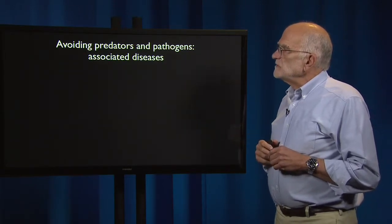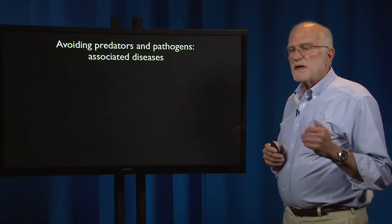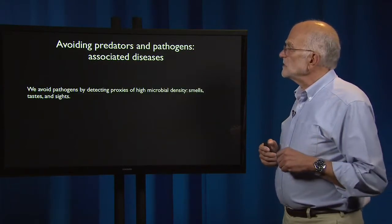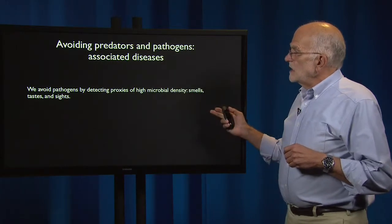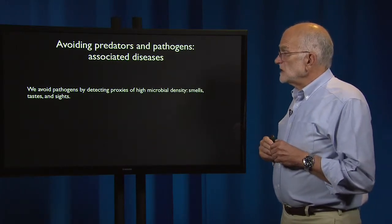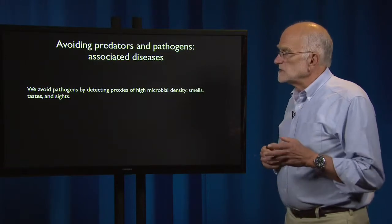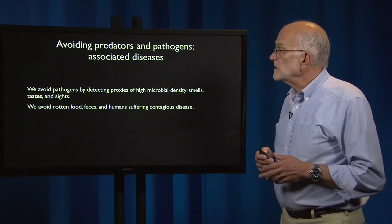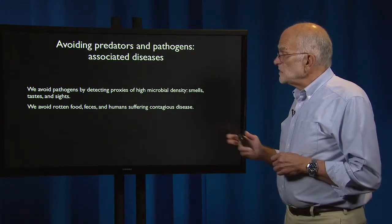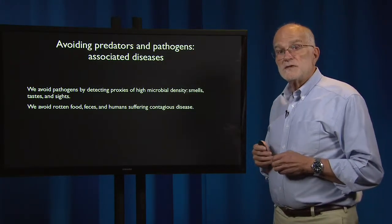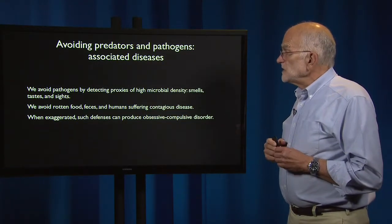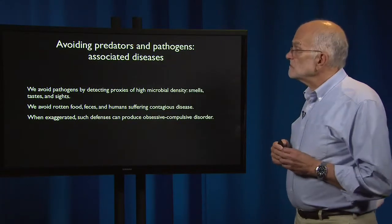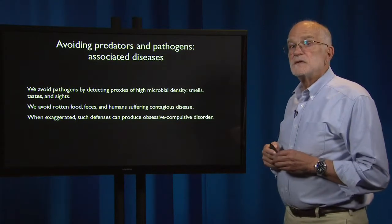We have also evolved defense mechanisms to avoid predators and pathogens, and to avoid the diseases associated with those pathogens. We avoid pathogens by detecting proxies of high microbial density — smells, tastes, and sights — the things we think are disgusting. We avoid rotten food, feces, and humans suffering from contagious disease. When exaggerated, such defenses can produce obsessive compulsive disorder — a disease of an exaggerated defense.